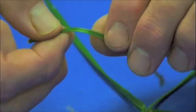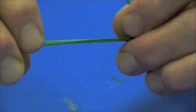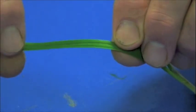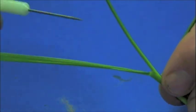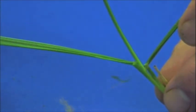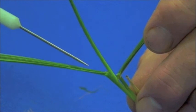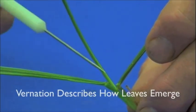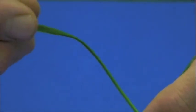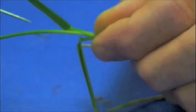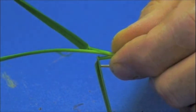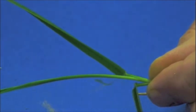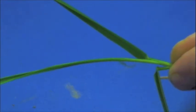Another characteristic useful for identifying tall fescue is the prominent veins on the leaf blade. Regarding leaf vernation — the way youngest leaves emerge from the center of the plant — there are two types: rolled or folded. Tall fescue has a rolled leaf vernation. Kentucky bluegrass and ryegrasses tend to have a folded vernation, as does orchard grass, which is another example of folded leaf vernation.